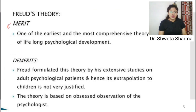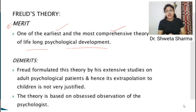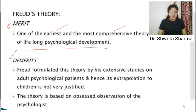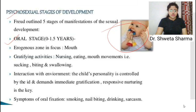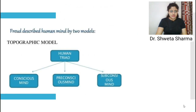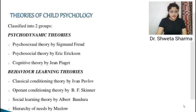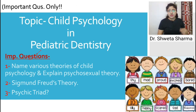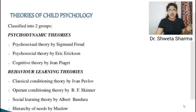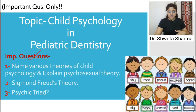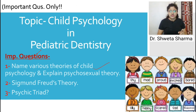The merits of Freud's theory: it is one of the earliest and most comprehensive theories of lifelong psychological development, and it forms the basis for further theories. The demerit is that it can be more helpful from an adult perspective rather than a child's perspective. To summarize the three questions covered: first, child psychology theories are psychodynamic and behavior learning; second, psychosexual theory is also called psychoanalytic theory by Sigmund Freud; third, psychic triad is id, ego, and super-ego.